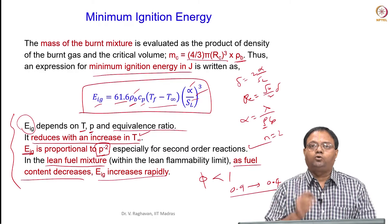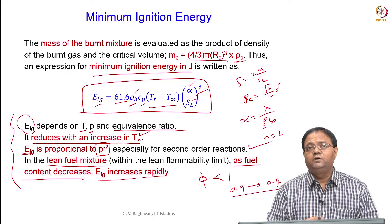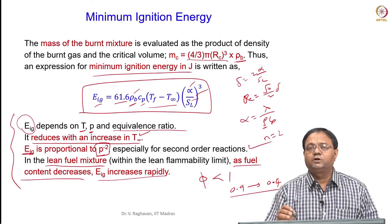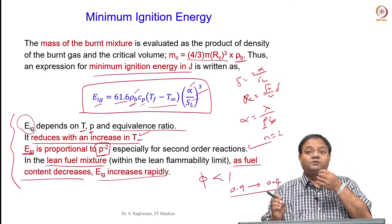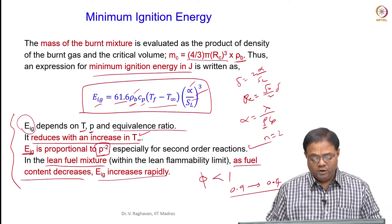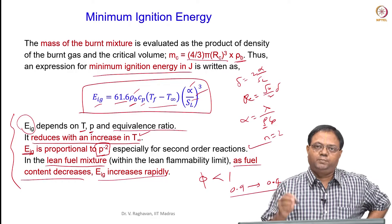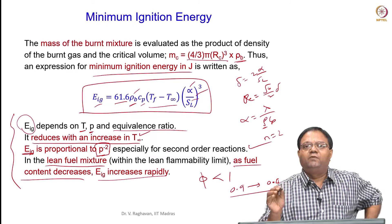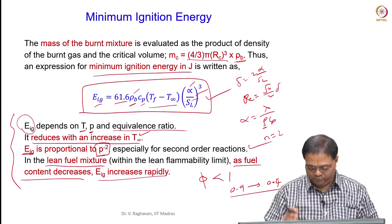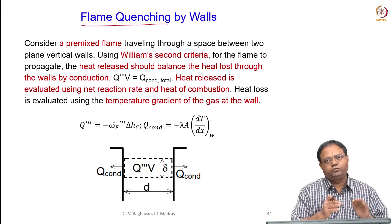We have seen two types of ignition: auto ignition, where for a given fuel, equivalence ratio, and unburnt reactant temperature, there is a specific auto ignition temperature — when reached, ignition is accomplished without any external source. In piloted ignition, you use a spark or pilot flame, and the energy supplied must meet a minimum value applied to a minimum volume of reactants. The next topic is flame quenching.